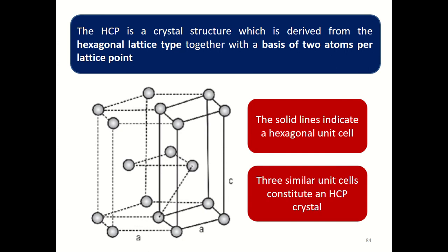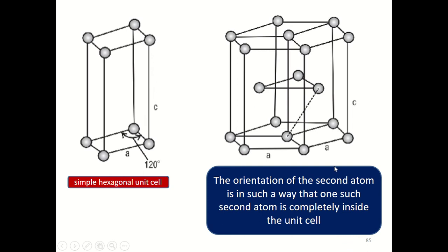What is shown in this image is a simple hexagonal unit cell. It has lattice points at each of its corners. The HCP crystal structure is derived from the hexagonal lattice type together with a basis of two atoms per lattice point. In order to accommodate two atoms per lattice point, a second atom is attached to every atom at the lattice point. Basis in HCP crystal structure means two atoms associated with the lattice point.